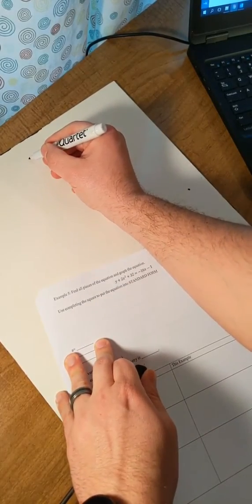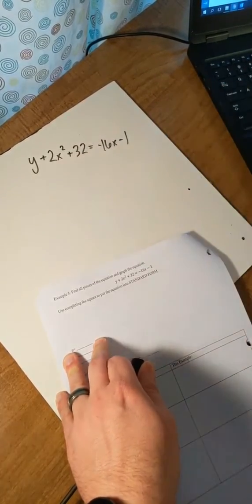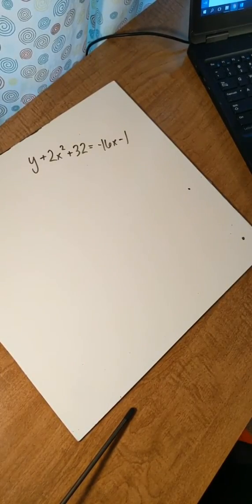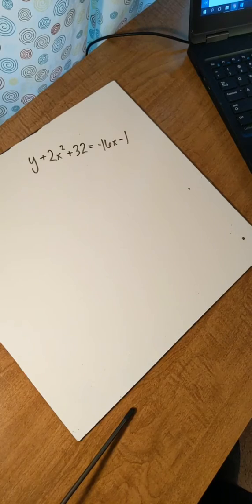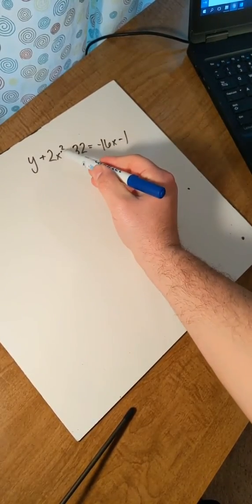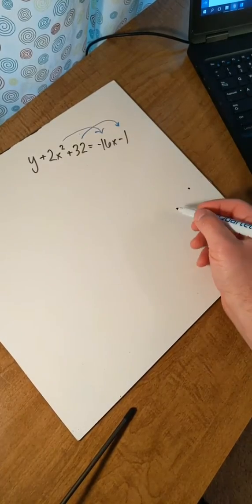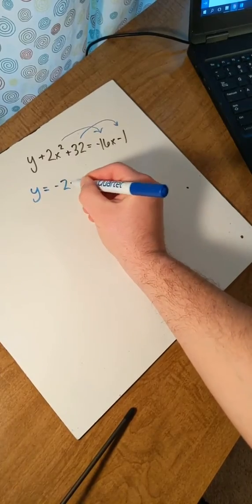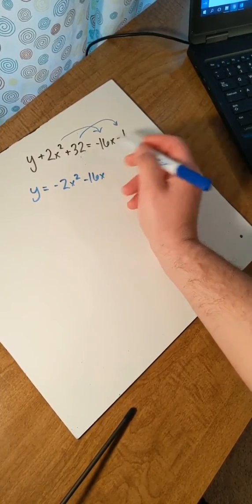Next problem: find all the information if we have y plus 2x squared plus 32 equals negative 16x minus 1. So let's repeat the process. What we need to do is get the variable by itself. We can see x is being squared, so we're going to get the y by itself. I'm going to move the 2x squared over and also the 32 over, and we get y equals negative 2x squared minus 16x minus 33.